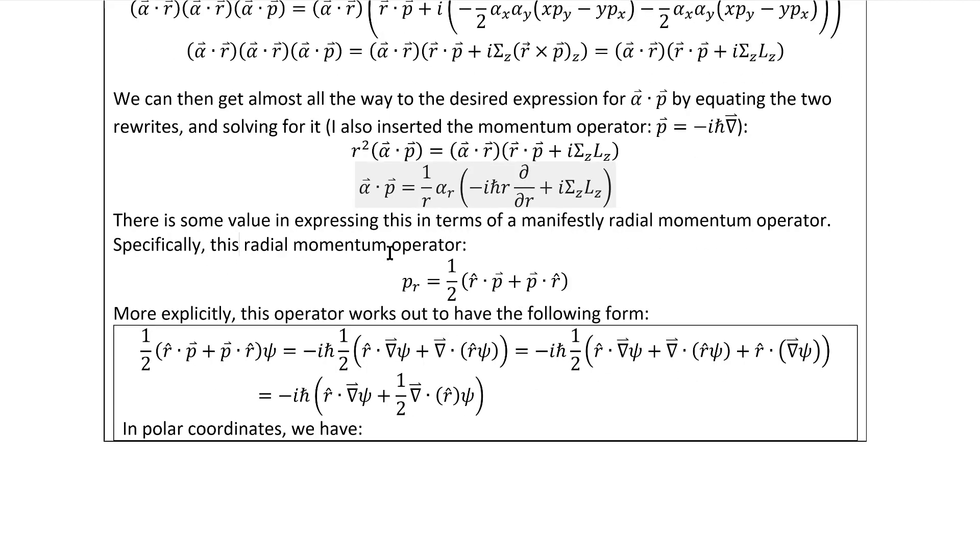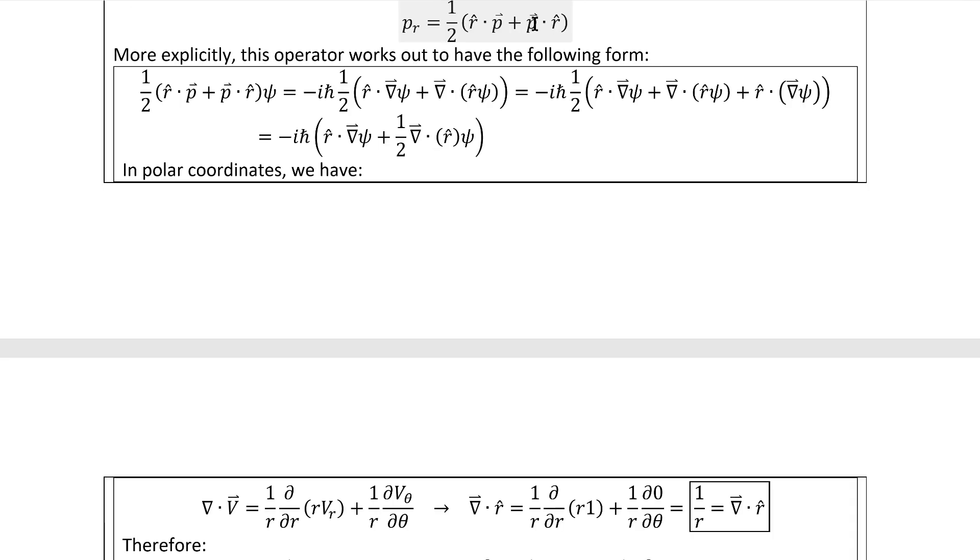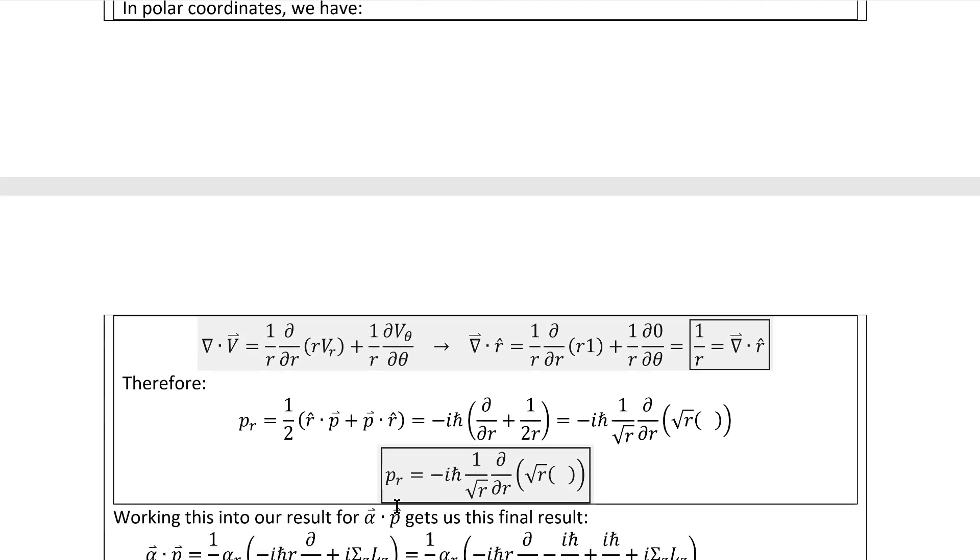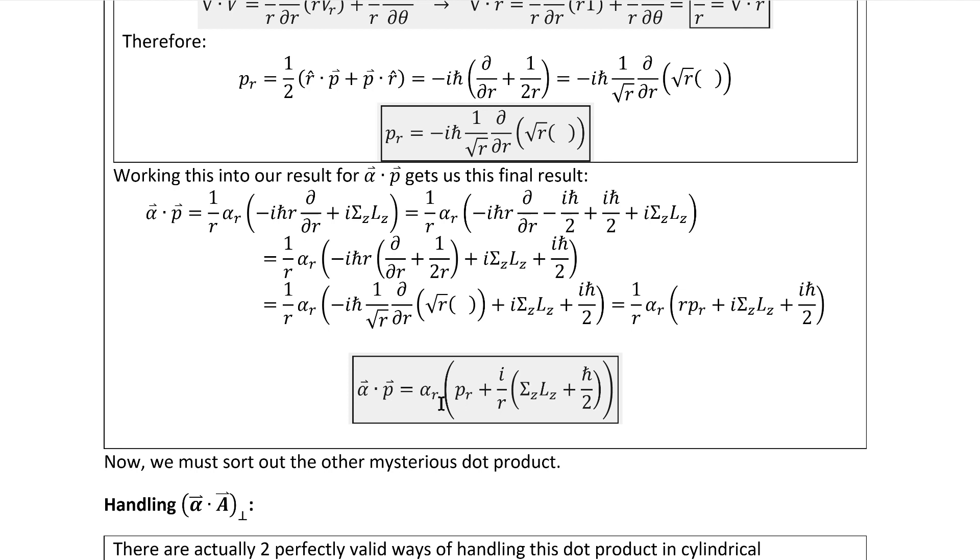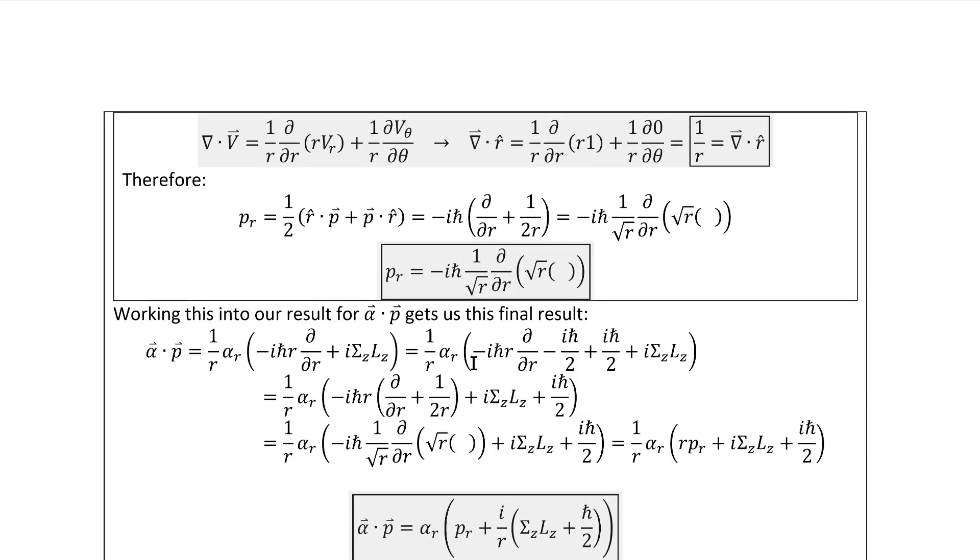Now there's some value in expressing this in terms of a manifestly Hermitian radial momentum. Specifically, this is the usual one. It's both manifestly Hermitian and has the correct classical limit, which are the two requirements it has to satisfy. More specifically, when we insert the del value of the momentum operator and we also remember what the divergence is in cylindrical coordinates, we end up finding this value for that momentum. We can then work that in, and we find this value for the alpha dot p dot product in terms of a manifestly Hermitian radial momentum operator.